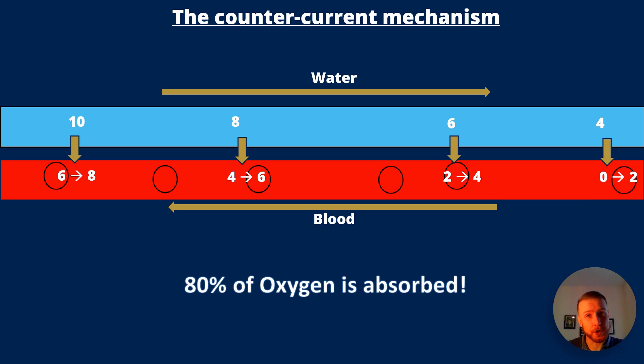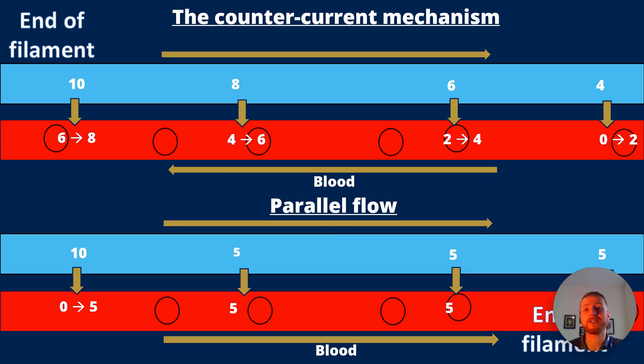So you can see that's a 30% increase compared to parallel flow. Let's have a look at a side-by-side comparison of these two processes. In the countercurrent mechanism, the water has gone from an oxygen level of 10 down to four and the blood has increased from zero up to eight. In the parallel flow, the water's gone from 10 to five and the blood has gone from zero to five. So the countercurrent mechanism wins.